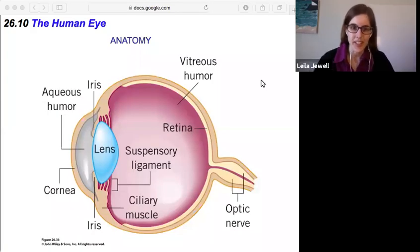Section 26.10, the human eye. This is a look at anatomy, a full application of the various optics we've been learning about, and a look at how the eyeball works. It turns out that light, as it passes into your eye, gets refracted by each of the various substances.